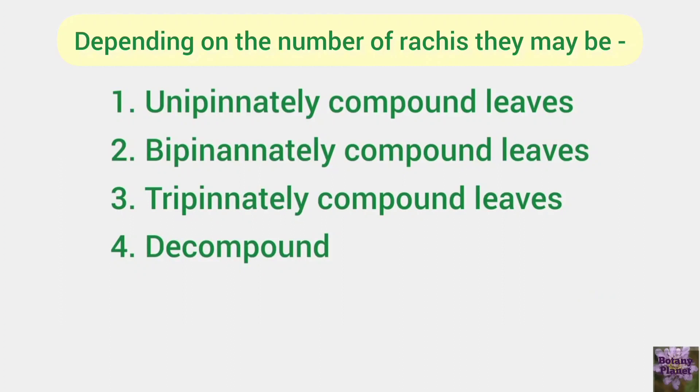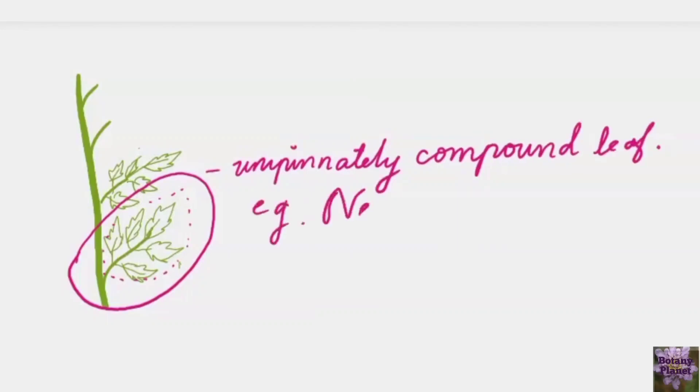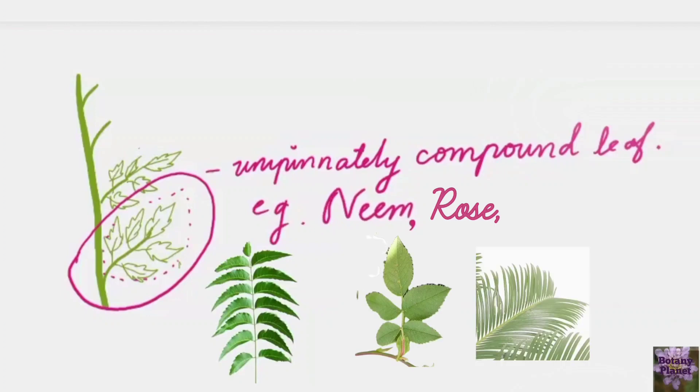Depending upon the number of rachises, there can be unipinnately compound leaves, bipinnately compound leaves, tripinnately compound leaves, and decompound leaves. Drawing the structure of a unipinnately compound leaf, the main stem gives rise to a rachis, and this rachis gives rise to multiple leaflets or pinnules. The aggregation of these leaflets or pinnules resembles a simple leaf structure together.